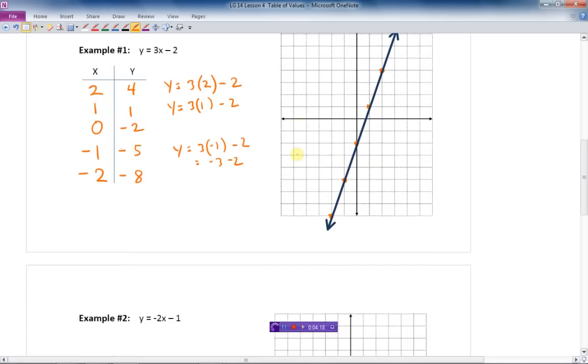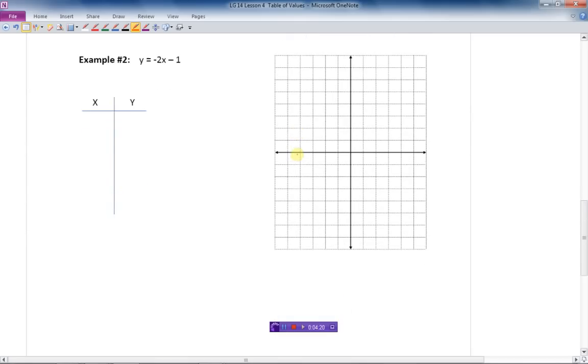Let's just graph one more, make sure we got the process down. Again, we have already done that first step. I have drawn the table here, X and Y at the top. Now I am going to put in some numbers. Let's choose some easy ones: 2, 1, 0, negative 1, negative 2.